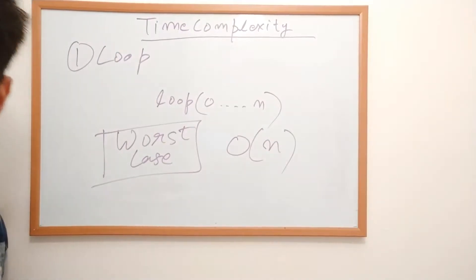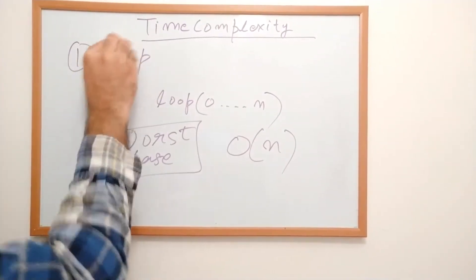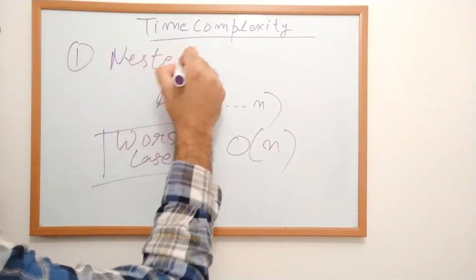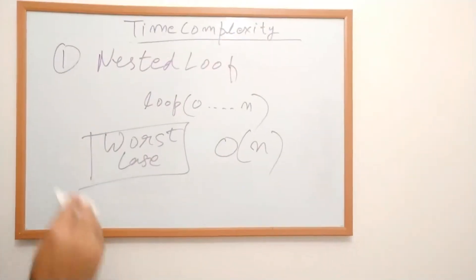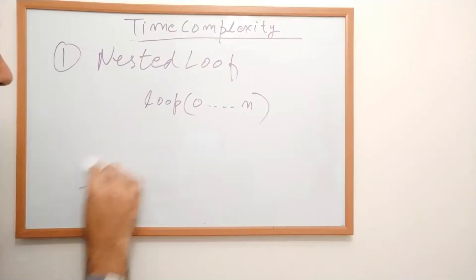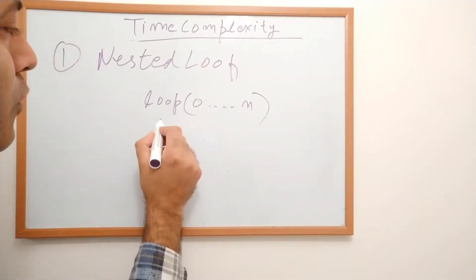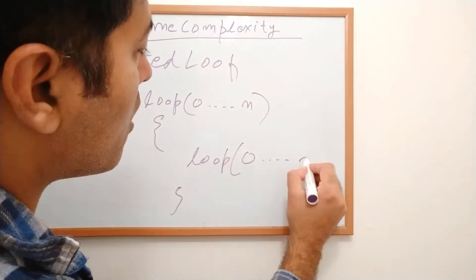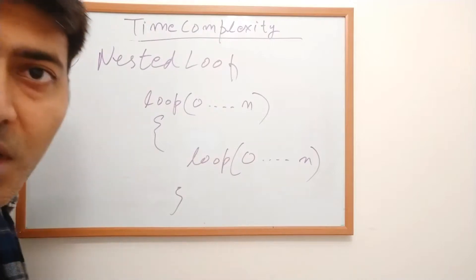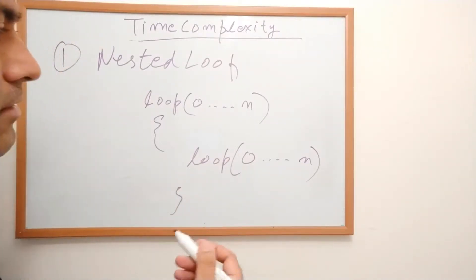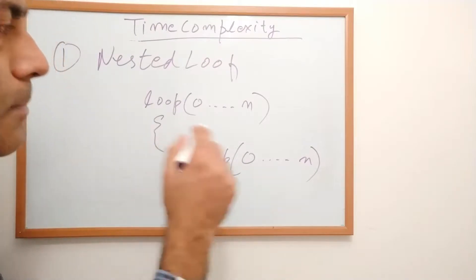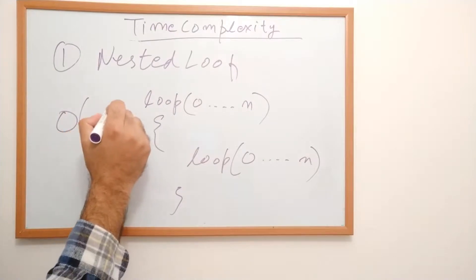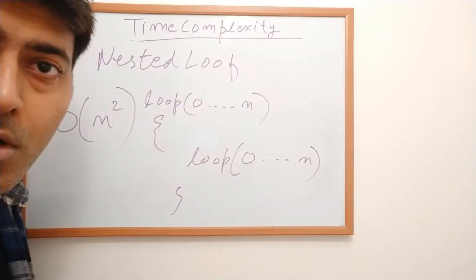Instead of one loop, if you have nested loops — more than one loop within each other — you can have a main loop that goes from 0 to n, and within that loop another loop also going from 0 to n. In that case your time complexity is quadratic: it is the multiplication of both, giving you O(n²).